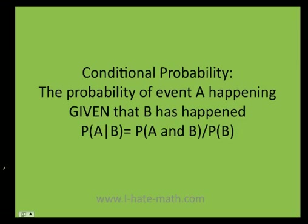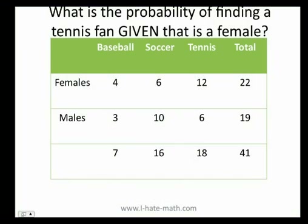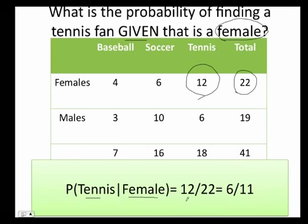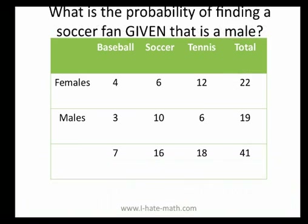Now let's talk about conditional probability — the probability of an event A happening given that B has happened. For example, what is the probability of finding a tennis fan given that it's a female? Here I have a condition: they're telling me to only look at the females. Remember, you only have 22 females. So the probability of finding a tennis fan given that it's a female equals 12 out of 22. I'm not using 41 because I only need to look at the females. Simplified, 12 over 22 equals 6 over 11.